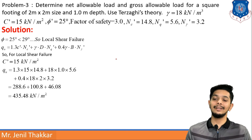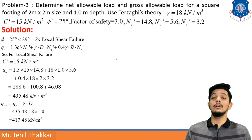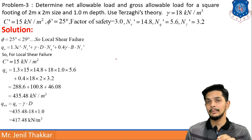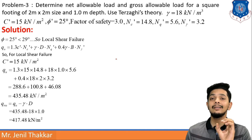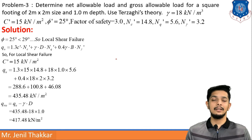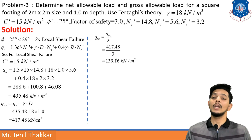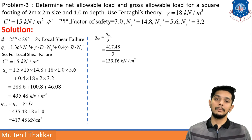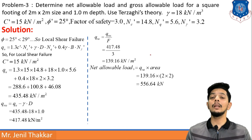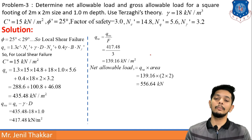Substituting all constants, qu = 435.48 kN/m². Then q_nu = qu − γ·D = 435.48 − 18×1 = 417.48 kN/m². The net safe bearing capacity is q_ns = q_nu / FOS = 417.48 / 3 = 139.16 kN/m².